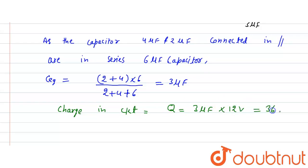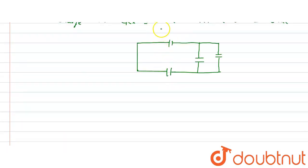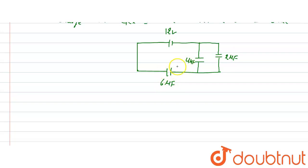Now we find the charge in the circuit. Q = C × V = 3 microfarad × 12 volt = 36 microcoulomb. Looking at the circuit diagram again: we have 12 volt supply, a 4 microfarad capacitor, a 2 microfarad capacitor, and a 6 microfarad capacitor.